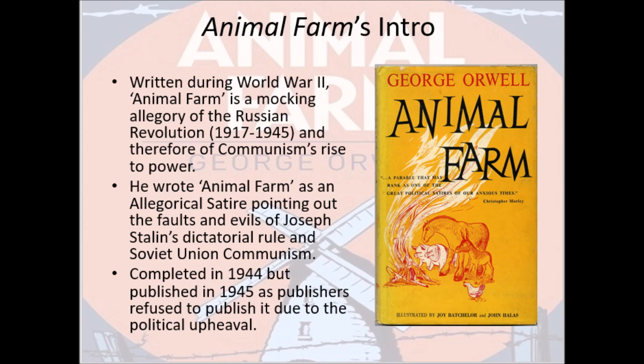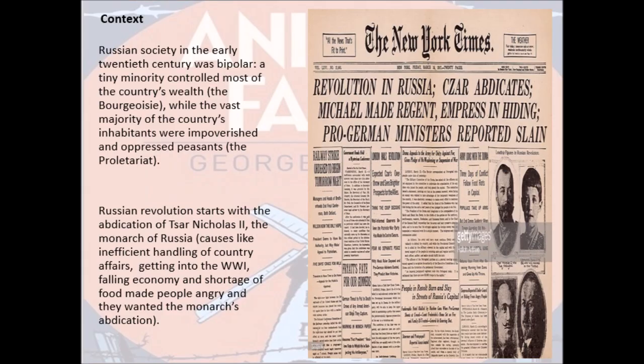The novel was refused publication in 1944 due to the wartime alliance between the Soviet Union and England, so as to avoid the ongoing political upheaval. It was published a year later. Since Animal Farm is an allegorical representation of the Russian Revolution, it is highly significant to understand the historical and political context of those times.